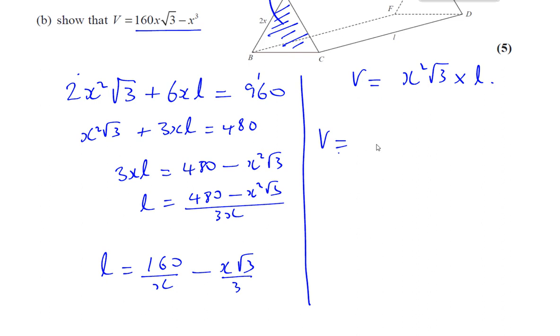The volume is equal to x squared root 3 times this expression, 160 over x minus x times root 3 over 3. And see what happens now when I multiply these two together. I'll have an x canceling out, so I'll have x times, so I'll have 160 times x times root 3, so 160 times x times root 3. That looks good so far.